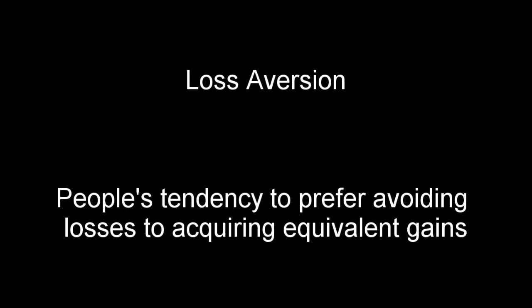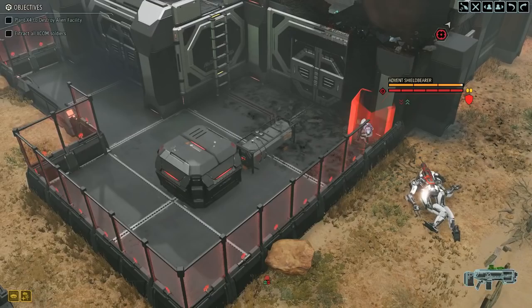These scenarios have two important takeaways. Firstly, players will usually take a sure gain over a gamble. And secondly, people will gamble to avoid a sure loss. Let's look at some examples of this in XCOM.